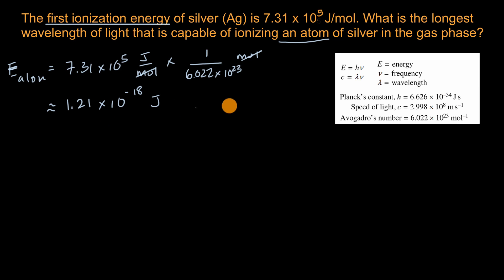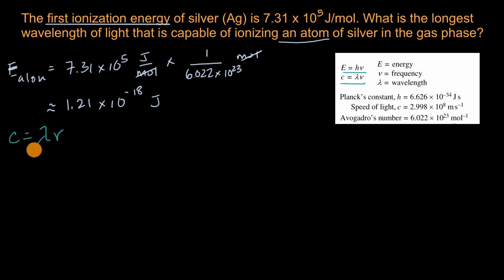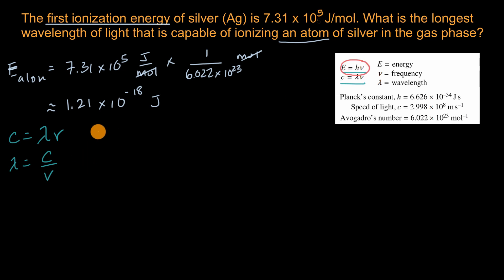Now how do we figure out wavelength? We know that the speed of light equals wavelength times frequency (ν, the lowercase Greek letter nu, not a V). Solving for wavelength gives λ = c / ν. To get frequency from energy, we use E = hν — Planck's constant times frequency — so frequency equals energy divided by Planck's constant.